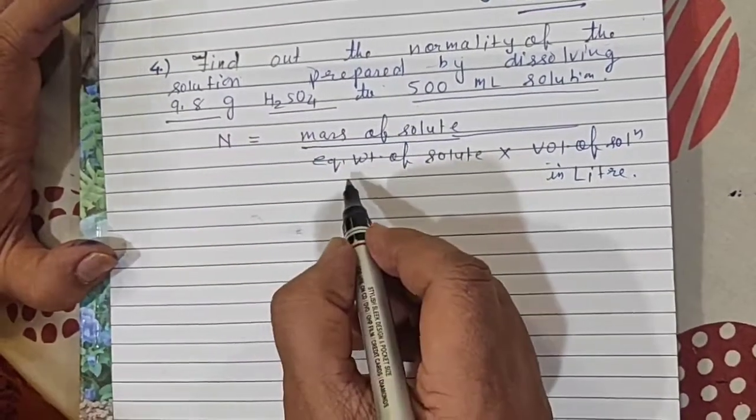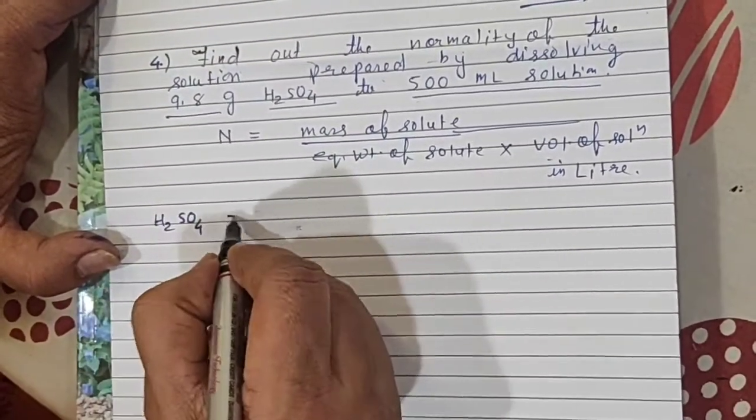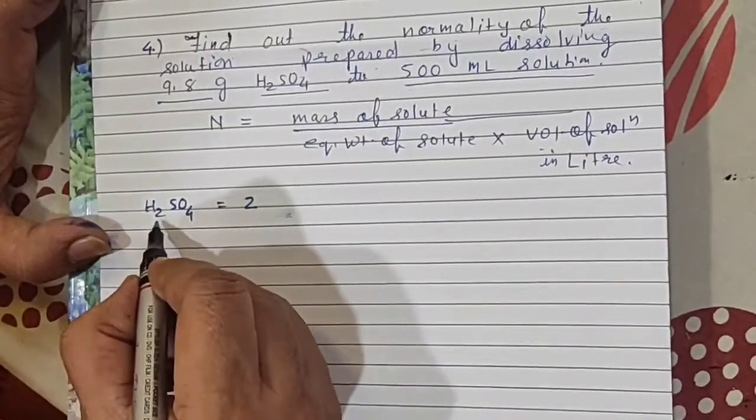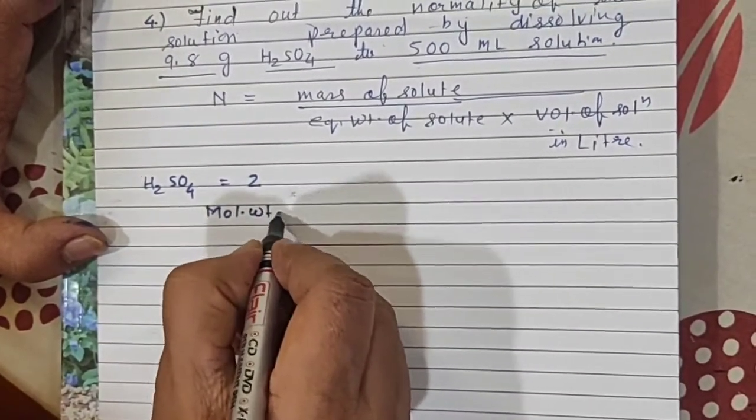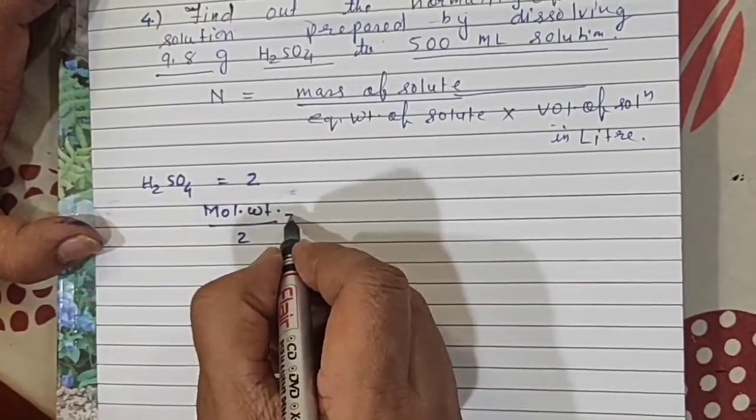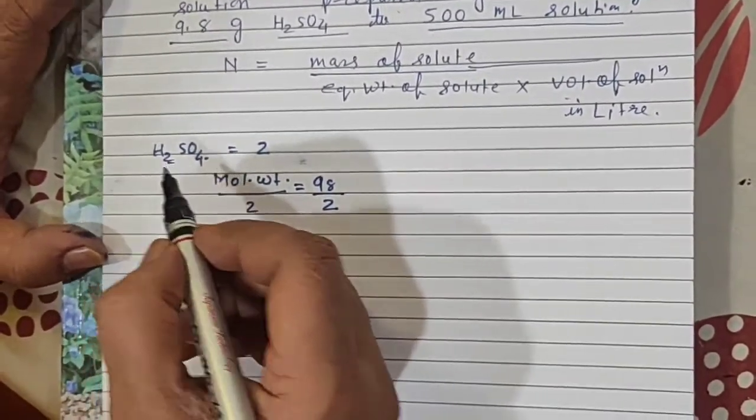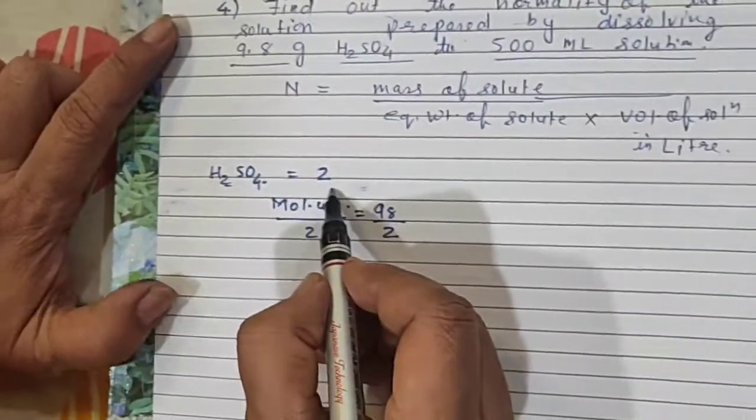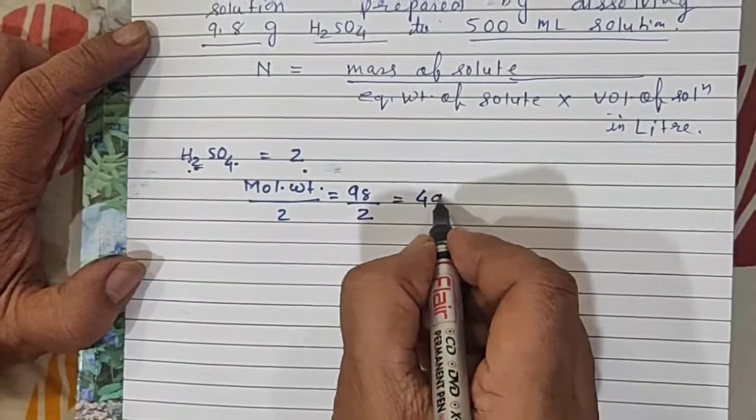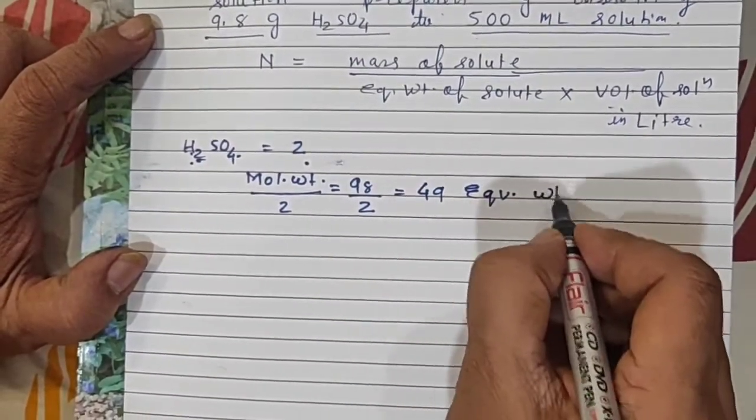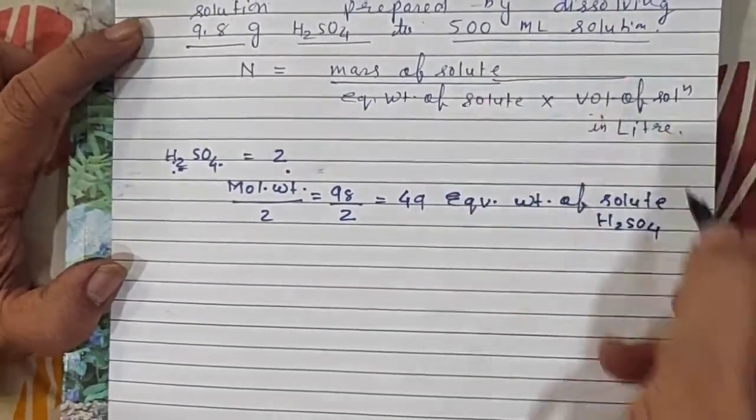So N equals mass of solute is 9.8 gram. But what will be its equivalent weight? As it is H2SO4, how many displaceable hydrogen are there? Two. How to find equivalent weight? Molecular weight upon displaceable hydrogen, that is 2. Molecular mass is 98. So 98 divided by 2, that is 49. 49 is the equivalent weight of solute H2SO4.